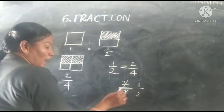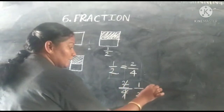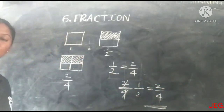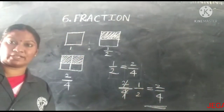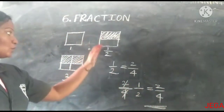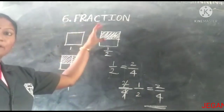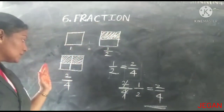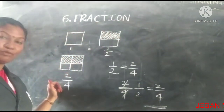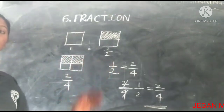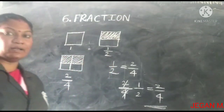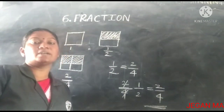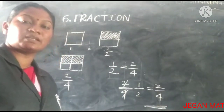So therefore, one-half equals two-fourths. Both are the same — one-half is also half the part and two-fourths is also half the part. Just use the 2 times table: 1×2=2, 2×2=4 — so one-half equals two-fourths. Both are half the portion, the same thing.